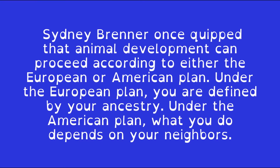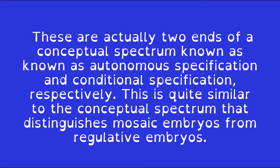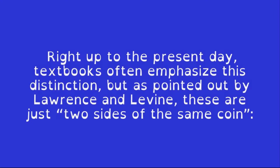Sidney Brenner once quipped that animal development can proceed according to either the European or American plan. Under the European plan, you are defined by your ancestry. Under the American plan, what you do depends on your neighbors. These are actually two ends of a conceptual spectrum known as autonomous specification and conditional specification, respectively.